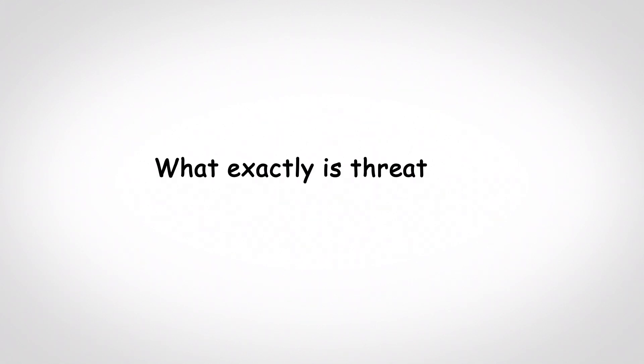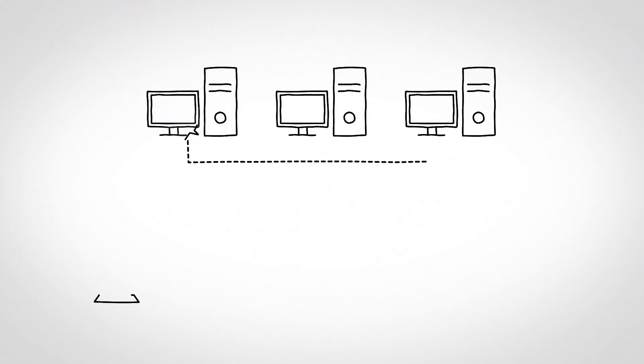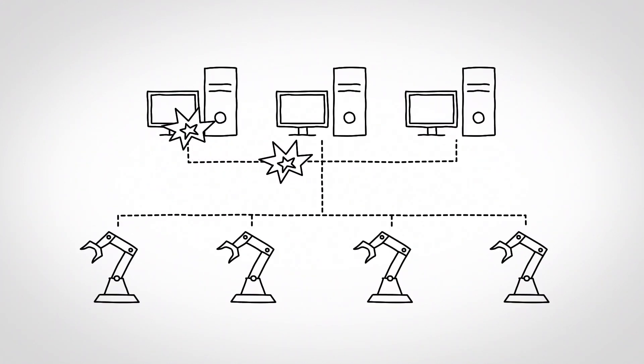What exactly is threatening industrial networks? Malfunctions from office environments are transferred directly to the production area.